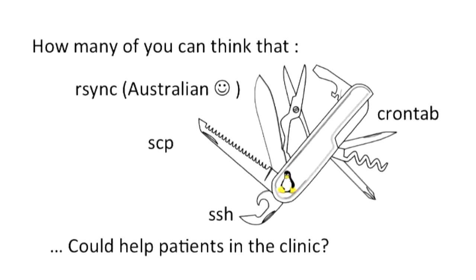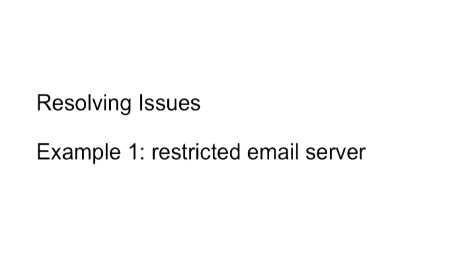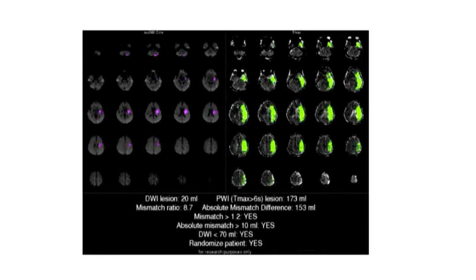Do you think simple things like rsync, scp, ssh, or crontab could actually help a patient in the clinic? Here's an example from day-to-day work: one of our participating sites had issues with their email server and could not send images to off-site doctors involved in our project. This particular image is a vital piece of information needed by doctors before they can make an informed decision. To solve the problem, we wrote a script via crontab to rsync those images to our server and then send an email to the doctor. Simple. No fancy things. But helping patients.